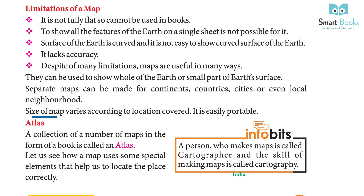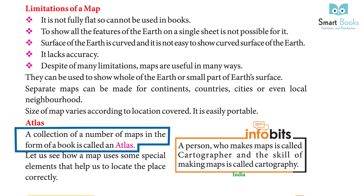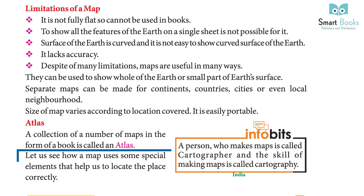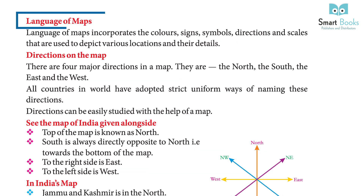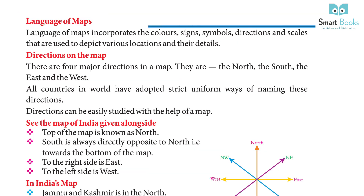The size of a map varies according to the location covered. It is easily portable. A collection of a number of maps in the form of a book is called an atlas. A person who makes maps is called a cartographer, and the skill of making maps is called cartography.